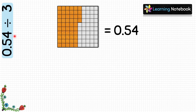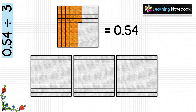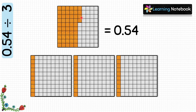The second number, 3, tells us how many groups we are going to have, so let's take 3 grid sheets. We have to take each tenth and place it in each of these 3 groups. Let's place 1 tenth in each group: 1, 2, 3. Now students, we are left with 2 tenths and 4 hundredths. We cannot place these 2 tenths into 3 groups. Can you tell me, in total, how many hundredths do we have?